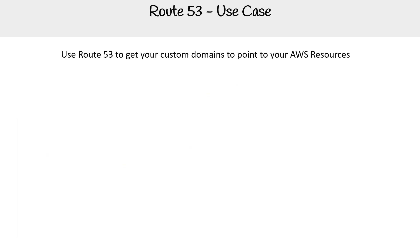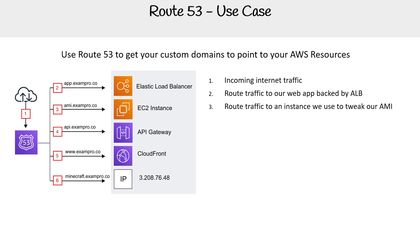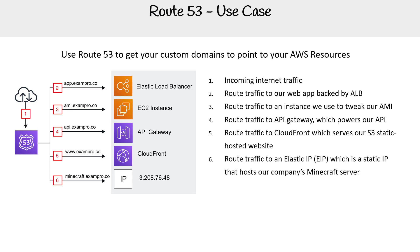What could be a use case for using Route 53? Well, just when you want to route things. Imagine you have incoming traffic into your VPC through Route 53, or anywhere — it doesn't necessarily have to be a VPC, but generally that's where it's going to be going. You could route traffic to an ALB, or to an instance, or to an API Gateway, or to CloudFront, or an Elastic IP. There are a lot of places you can send your routing data, and we'll cover that in the upcoming slides.